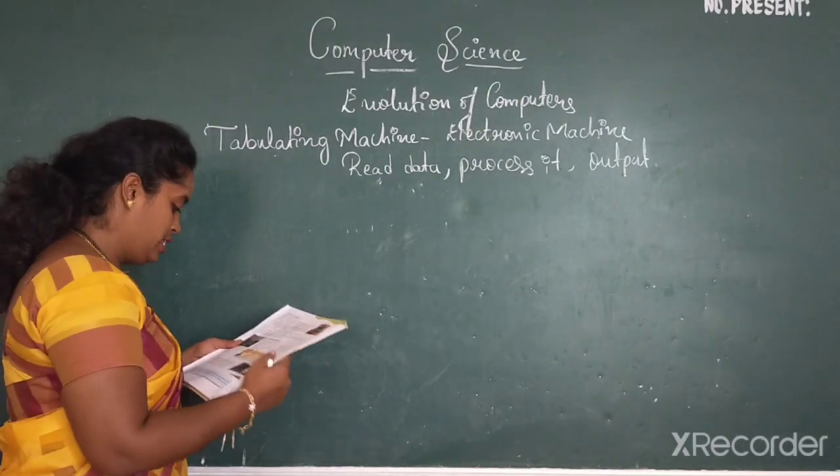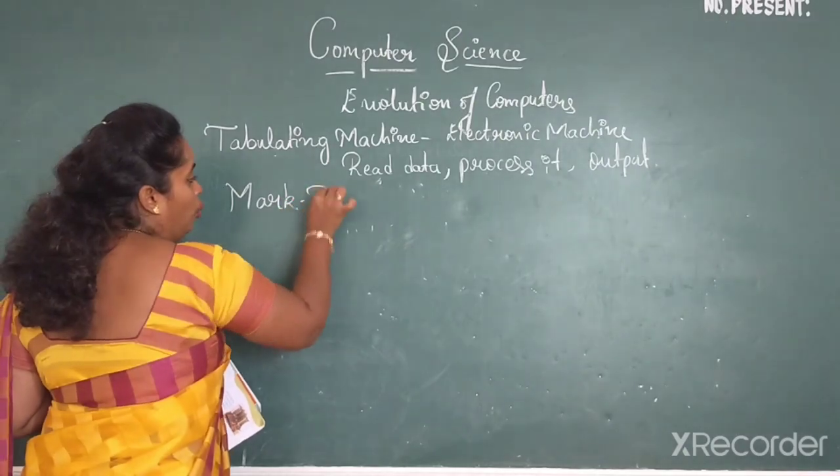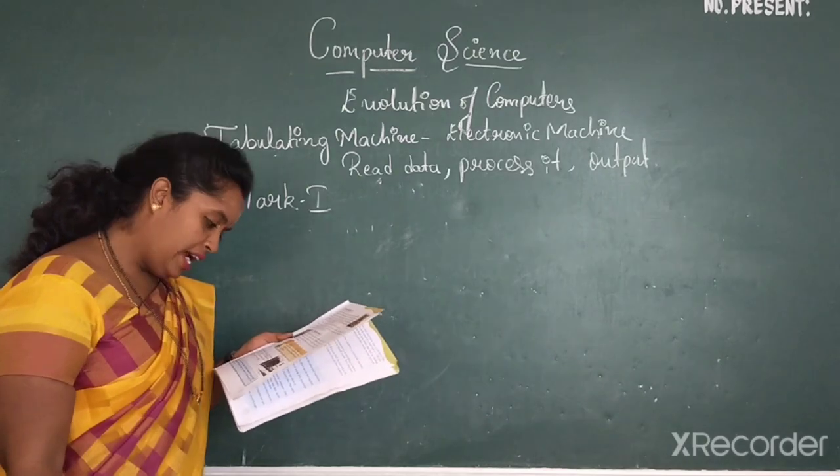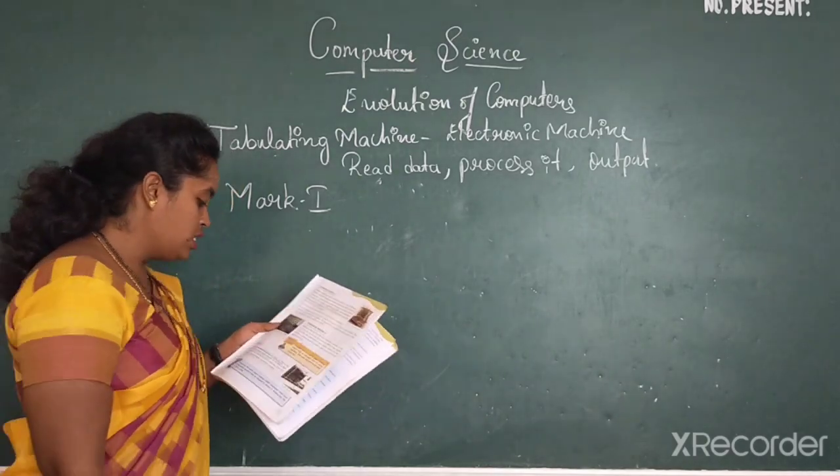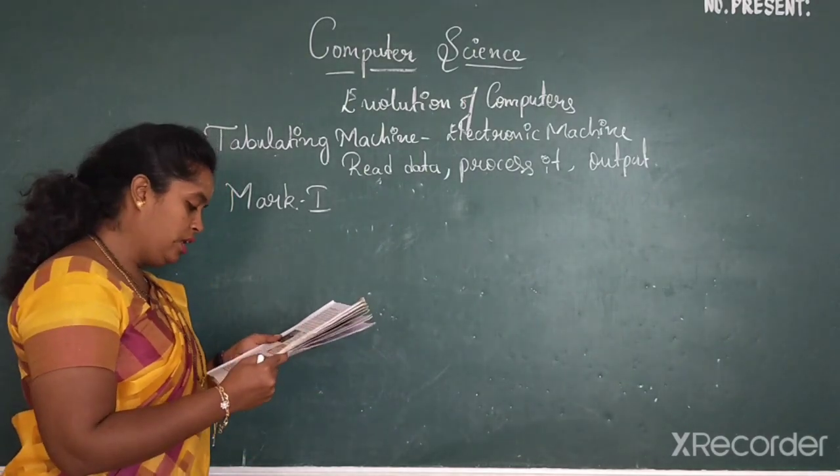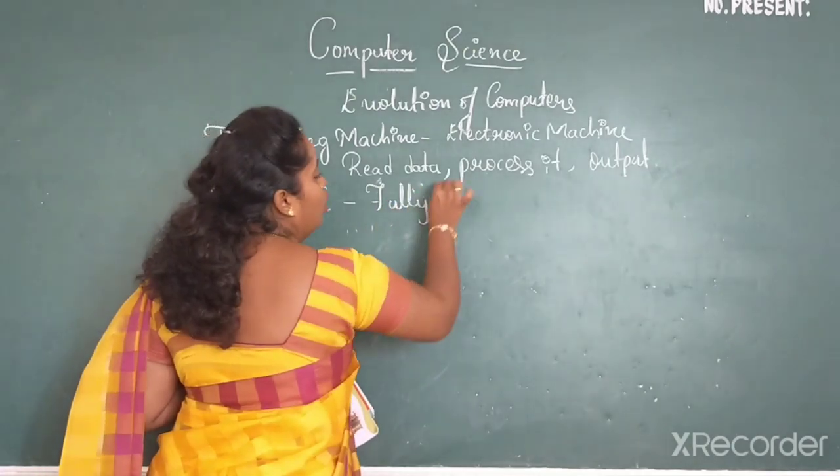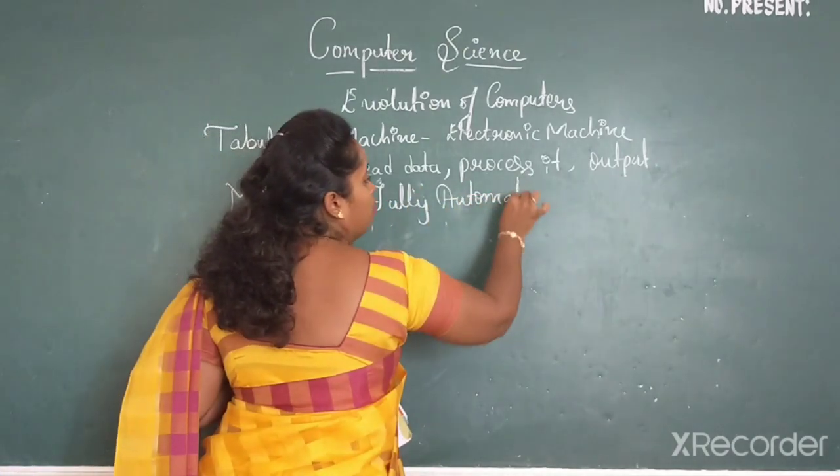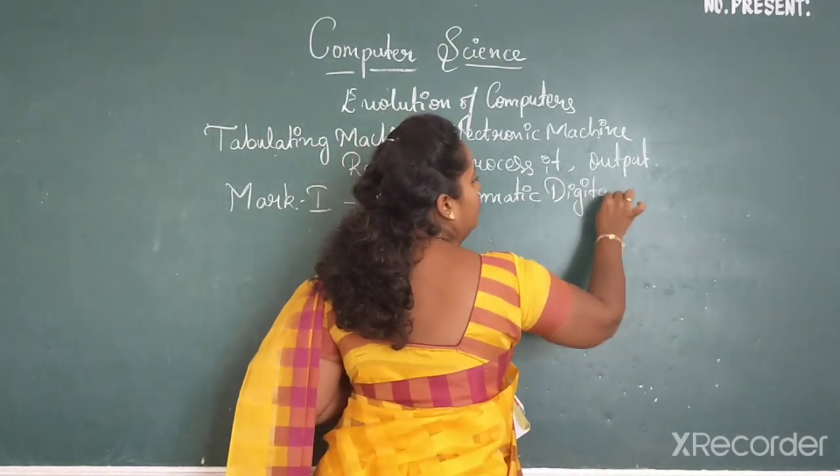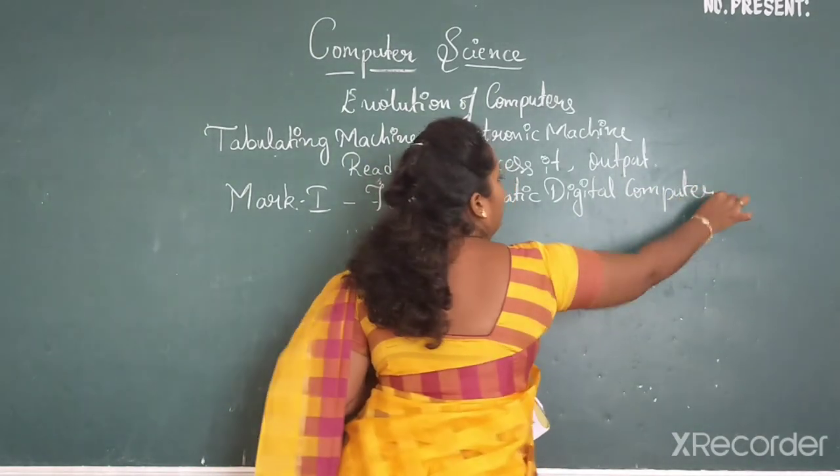Then next one is Mark I. Howard H. Aiken designed this machine which was first fully automatic digital computer.